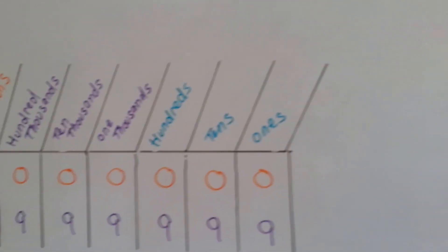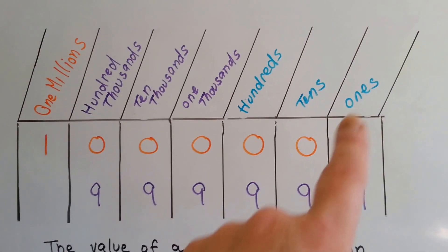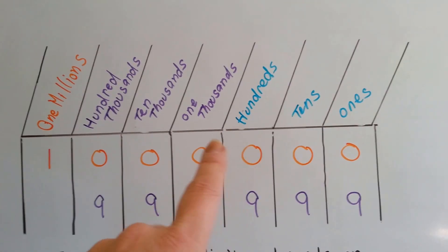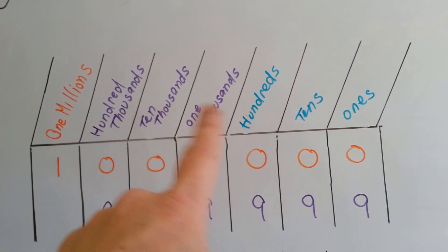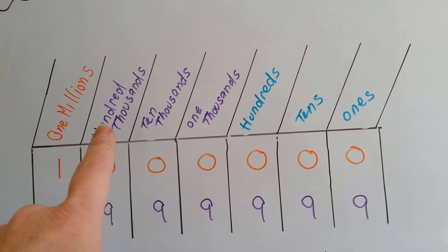So let's take a look at a place value chart. We've got our ones, tens, and hundreds. Then we get into the thousands. There's three rows of thousands. There's the one thousands, the ten thousands, and the hundred thousands.